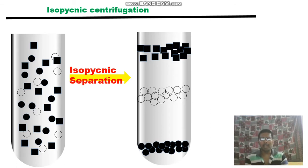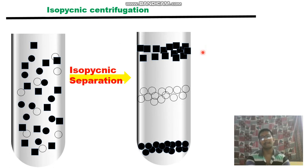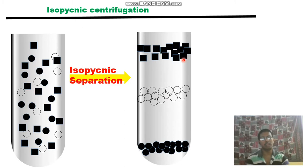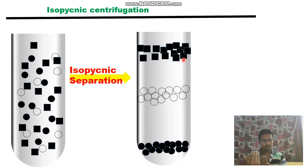There are two types of gradient: continuous gradient and discontinuous gradient. In a continuous gradient, you end up with different zones containing particles of different density — higher density, middle density, and lightest density. In a discontinuous gradient, separation of different particles occurs at the interface layer between two layers of the discontinuous gradient.